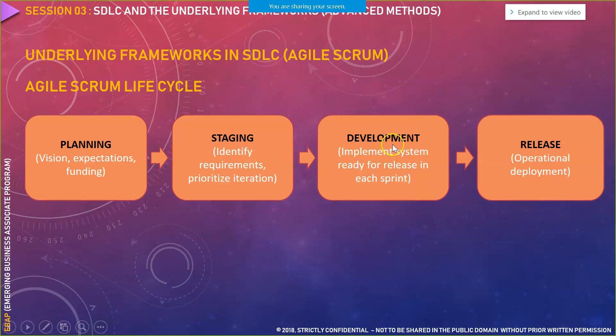The development phase is where you implement system features ready for release in each sprint. After every sprint you get a better version of the system with more features compared to the earlier sprint cycle. Finally, the release phase is where all your code is deployed to various environments. In agile we also have different environments: local development environment, QA environment, SIT (system integration testing) environment, UAT (user acceptance testing) environment, and production environment.